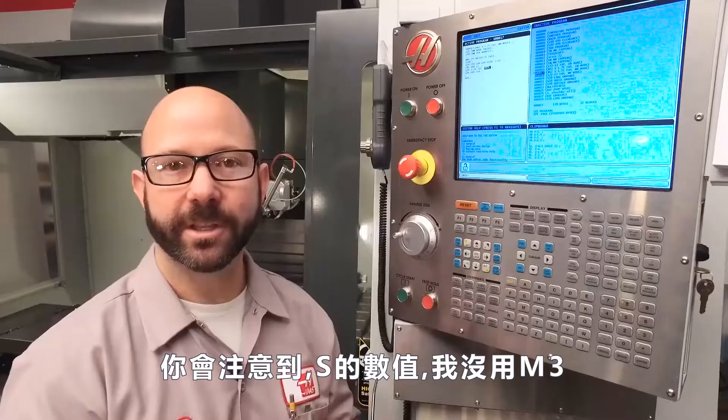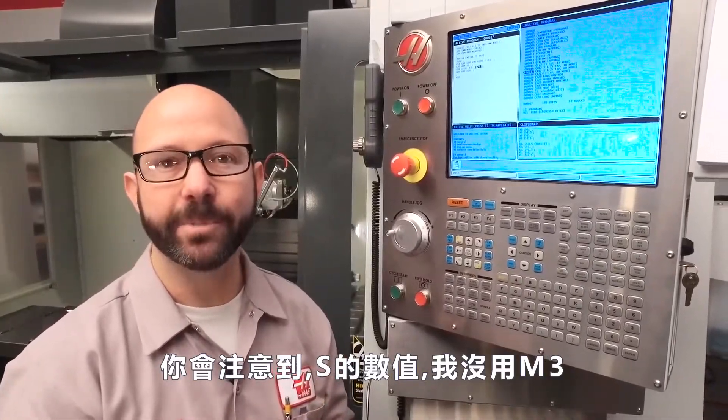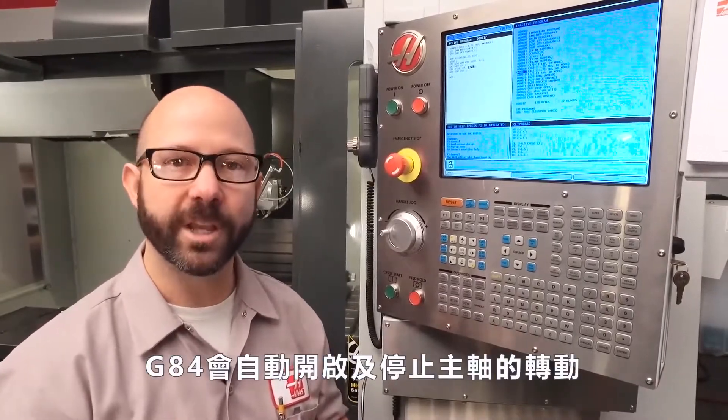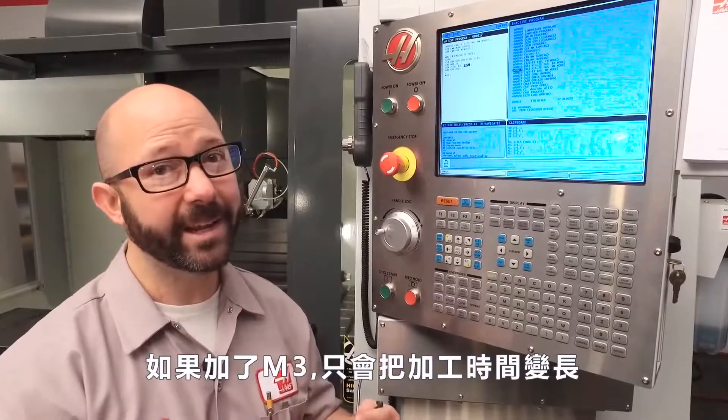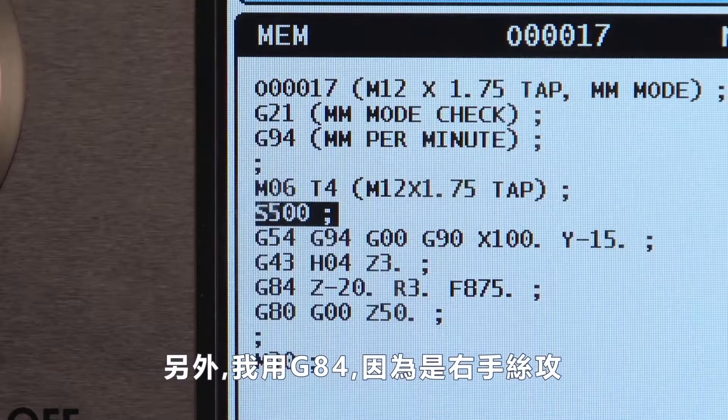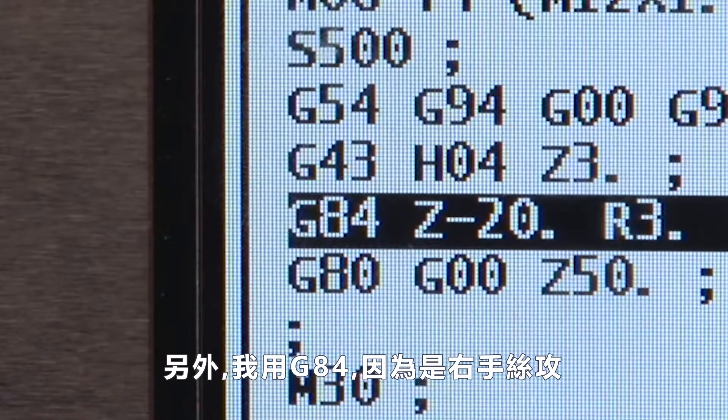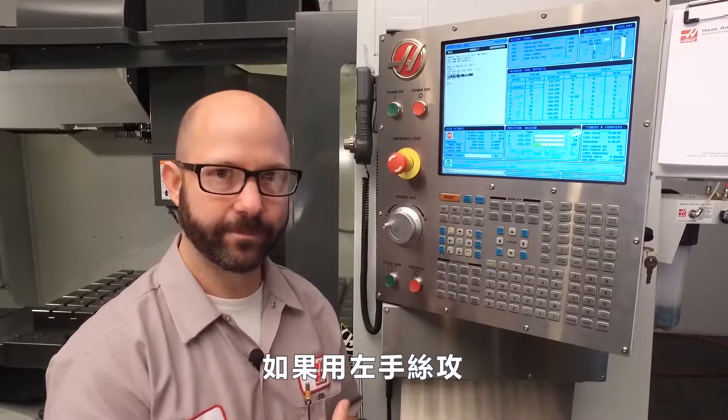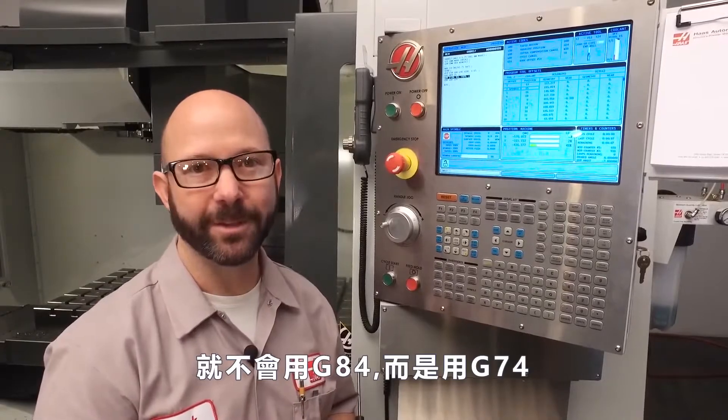Now you might have noticed that when we enter our S500, we did not put in an M3. The G84 cycle is going to start and stop the spindle as necessary. If we add an M3, it's just going to make the program take longer. Also, we used a G84 because we're using a right-hand tap. If you were going to cut a left-hand thread, we'd use a G74. You can look up G74 in the manual.